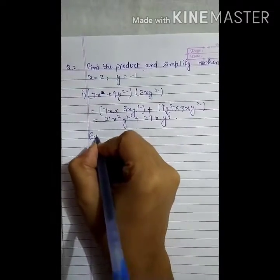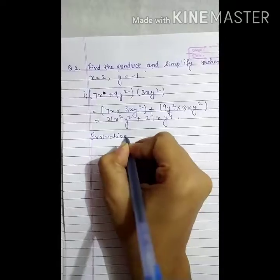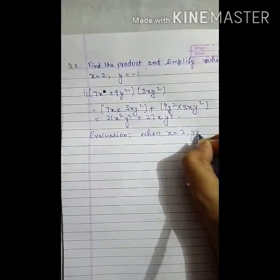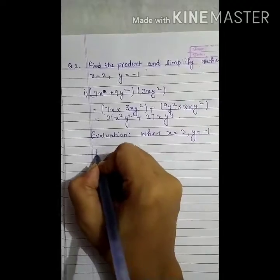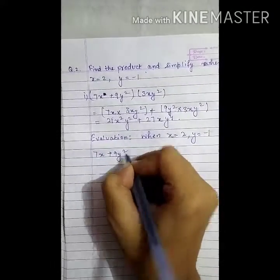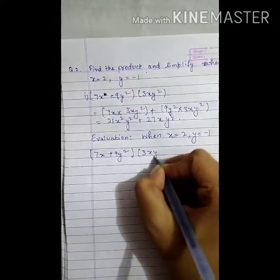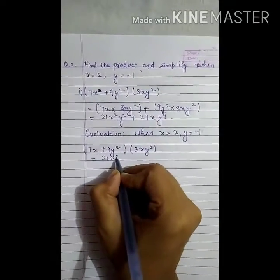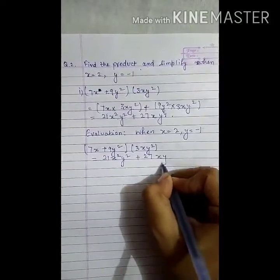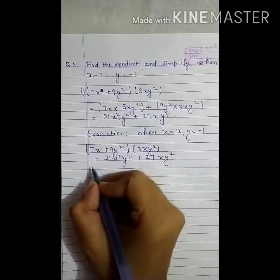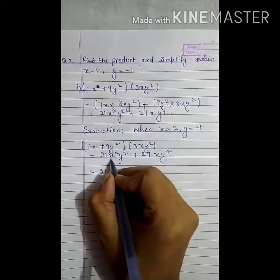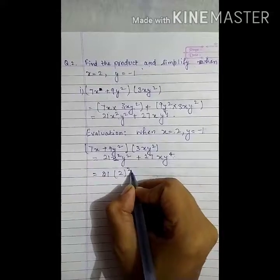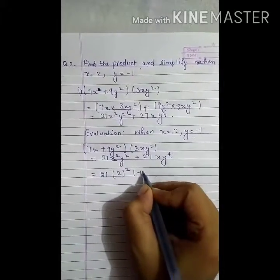Now we have to evaluate. Substituting x equals 2 and y equals minus 1 into 21x squared y squared plus 27xy to the power 4. Put x equals 2: 2 squared. Y equals minus 1: minus 1 squared. Plus 27 times x equals 2, and y equals minus 1 to the power 4.